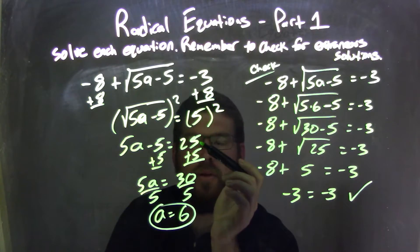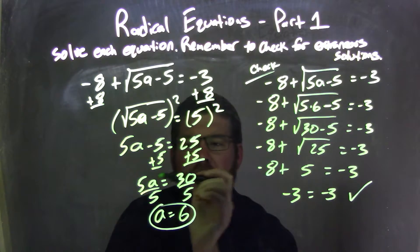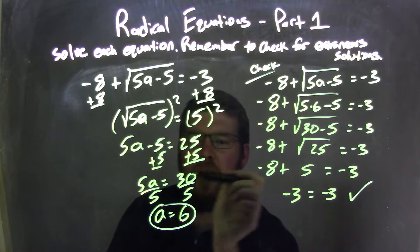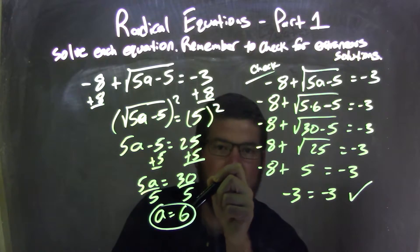Negative 3 plus 8 is 5, 5 squared is 25. I added 5 to both sides, leaving me with 5a equals 30. Divided by 5 on both sides, a was equal to 6.